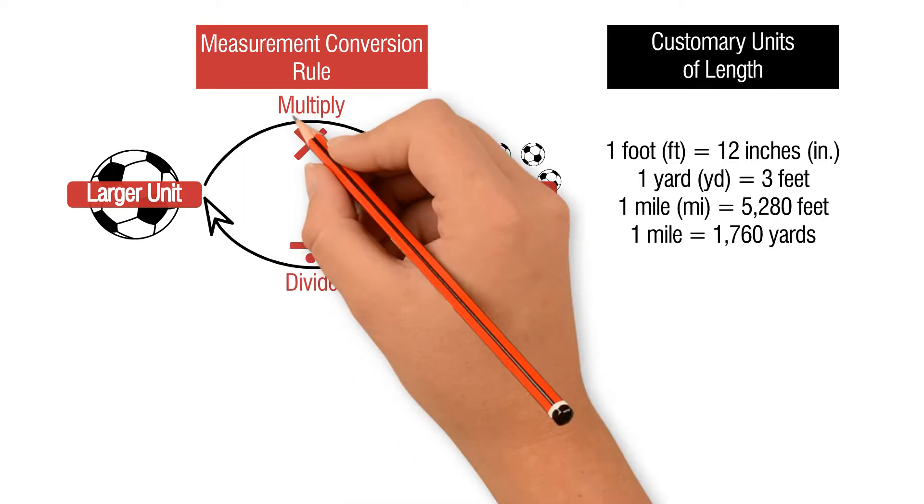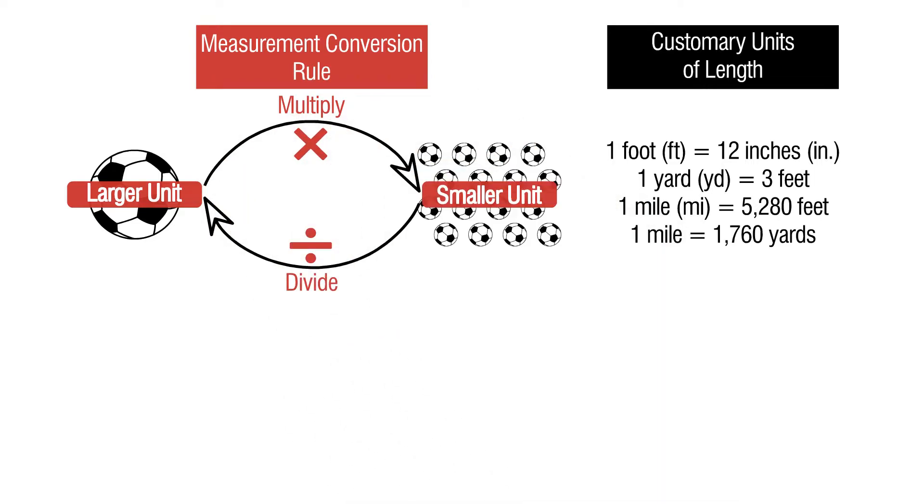To change from larger to smaller units of length, we multiply. To change from smaller to larger units of length, we divide.